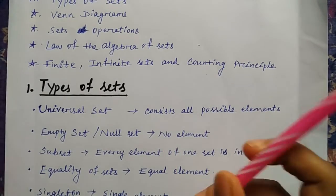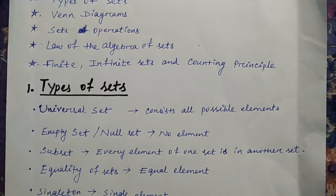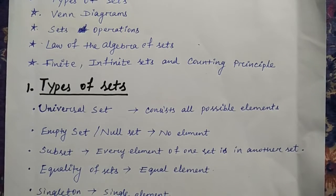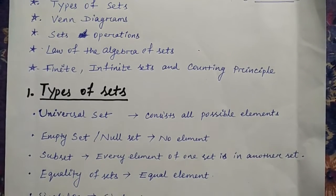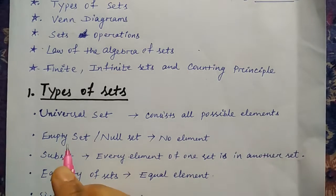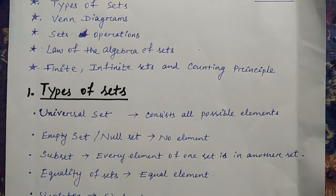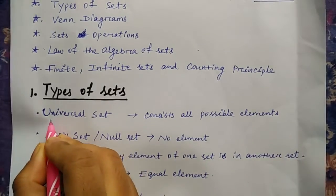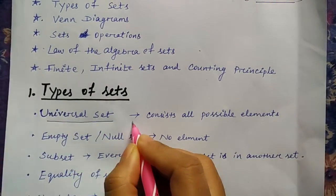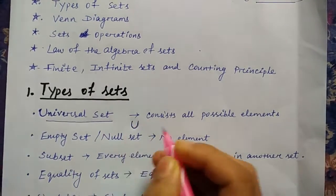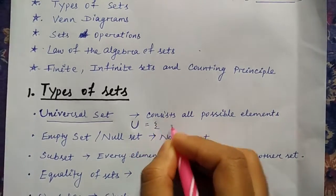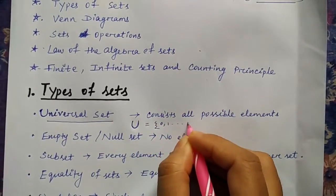First thing is the universal set. Universal set in the sense which consists of all possible elements. All possible elements means whatever the element exists in the world or in the universe, everything you can include within the universal set.